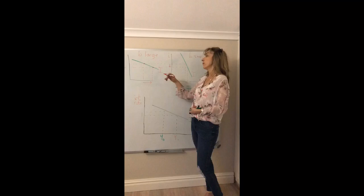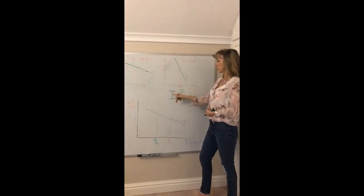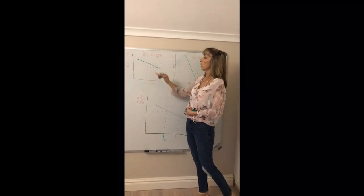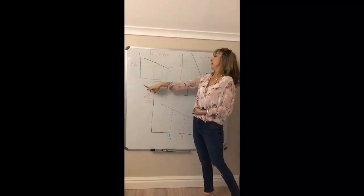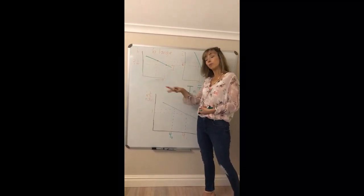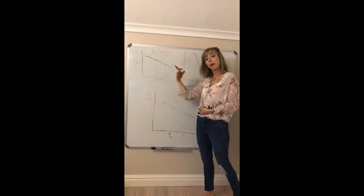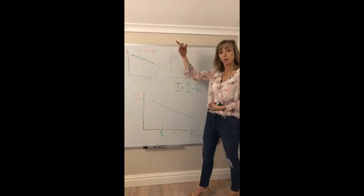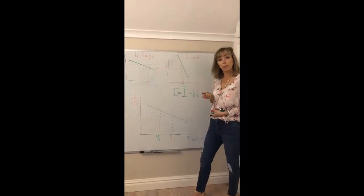So what effect does that have? If B is larger, your sensitivity of investment to the interest rate is larger or more sensitive. When the interest rate drops, planned investment rises by much more, which in turn causes your aggregate demand curve to shift up much more and your income will change by much more.